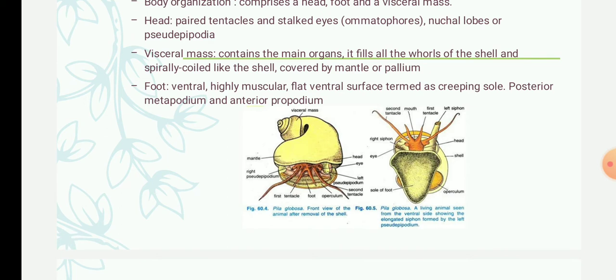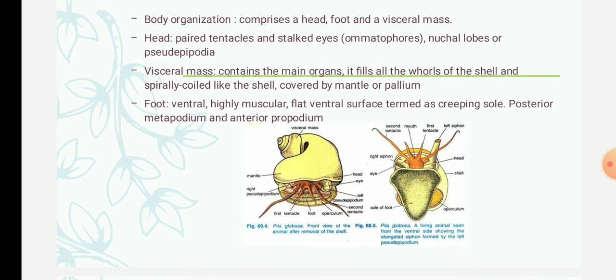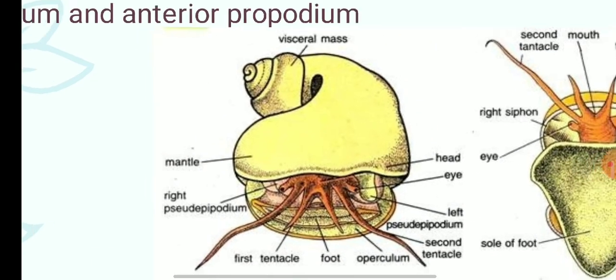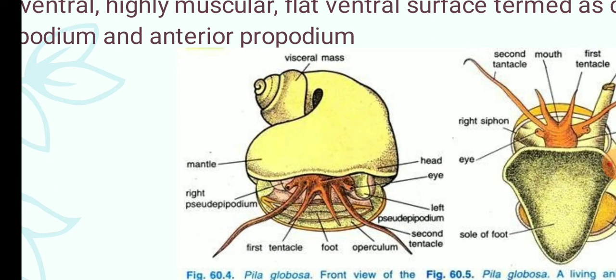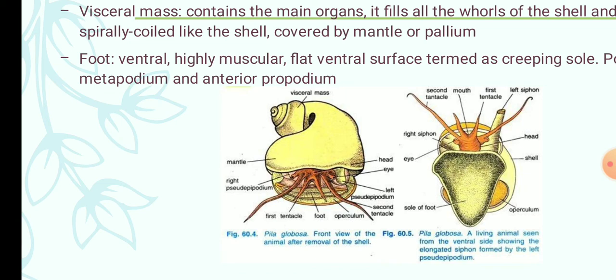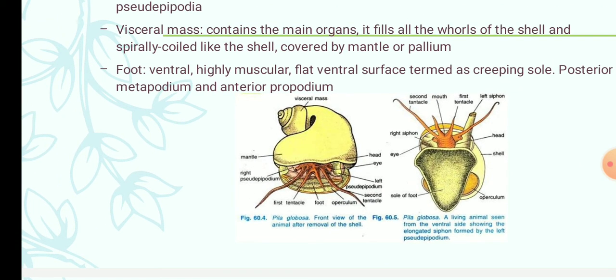At the side of the head, the mantle is produced into processes called natural lobes, also termed pseudopodia. There are two pseudopodia: the left one is much larger, whereas the right one is smaller. These are formed by folds on the sides of the head from the mantle.